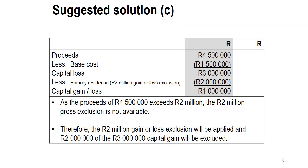Scenario C: proceeds of 4.5 million — immediately we don't use the gross exclusion because proceeds are not less than 2 million. Proceeds 4.5M less base cost 1.5M gives a capital gain of 3 million rand. The first 2 million rand of that gain is excluded, and therefore only 1 million rand will be included in the sum of capital gains and losses.